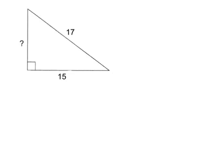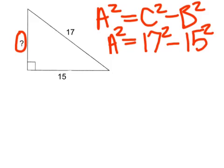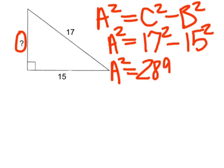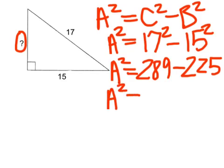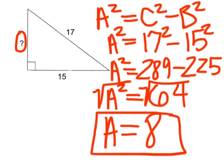Example 4. What are we looking for this time? The leg. So we're going to have A squared equals C squared minus B squared. Plug in 17 for C and 15 for B. What is 17 squared? 289. What is 15 squared? 225. What do we get when we subtract? 64. What do we need to do next? Square root both sides. The square root of 64 gives us 8. That is our final answer.